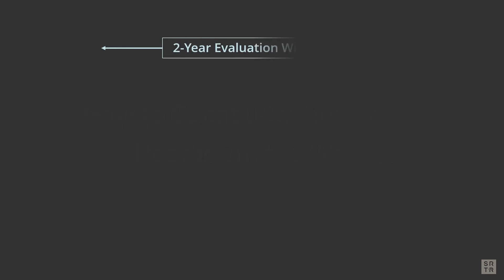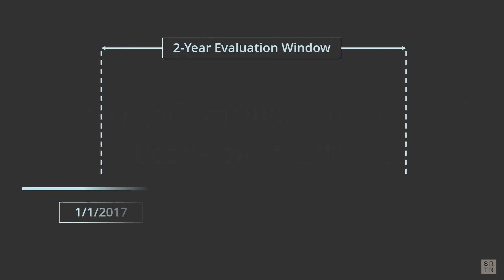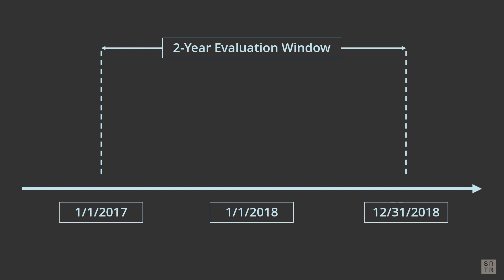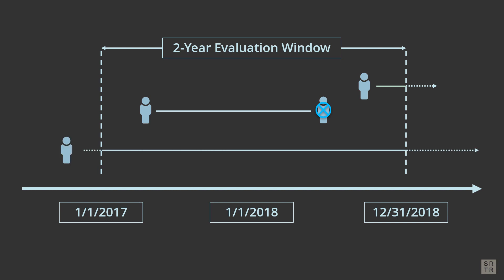In a given reporting period, SRTR analyzes a two-year observation period. Any candidate listed by the transplant program before the close of the 24-month period who was alive and met inclusion criteria for at least one day during the 24-month period is included. Any candidates already on the list at the beginning of the period are also included. The time the candidate is on the list during the observation period contributes to the person years metric.